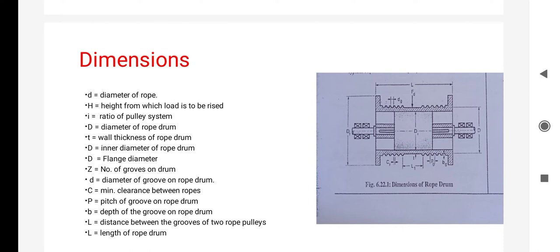d is the diameter of rope, D is the diameter of rope drum, and Z is the number of grooves on the drum. For the construction of any object, we require dimensions. Dimensions give the numerical value by which we can imagine the size or shape of that figure or object.